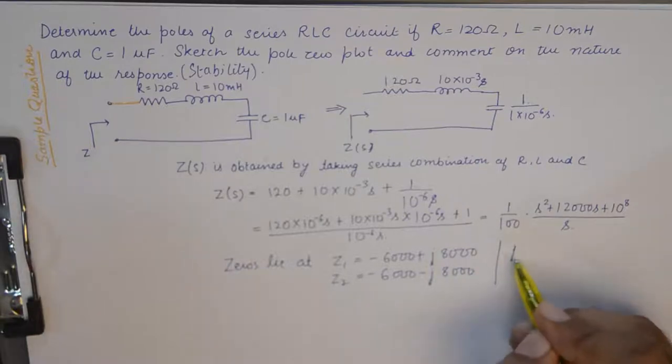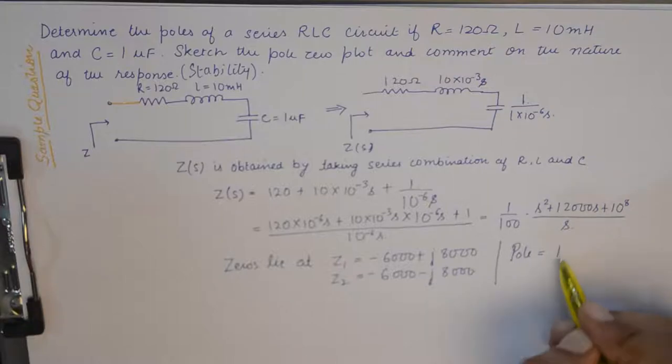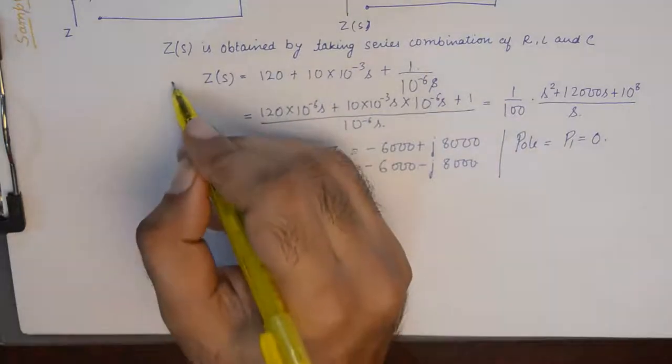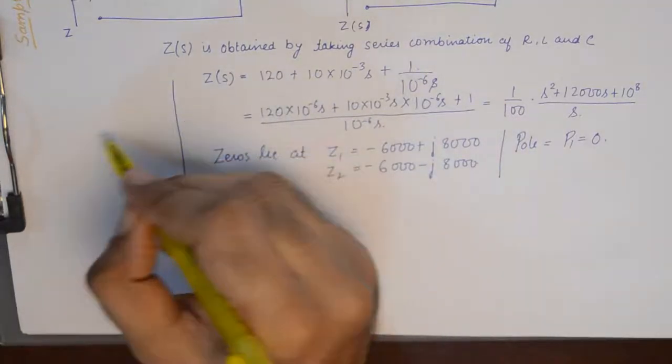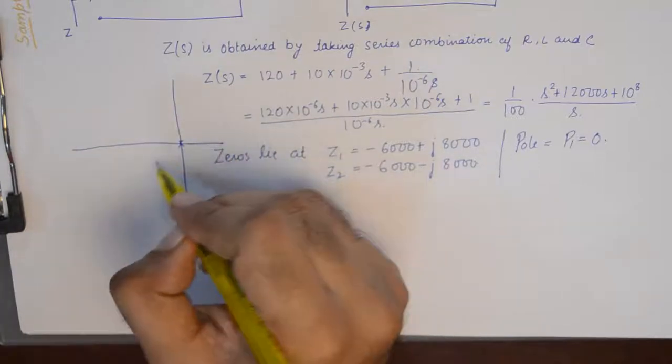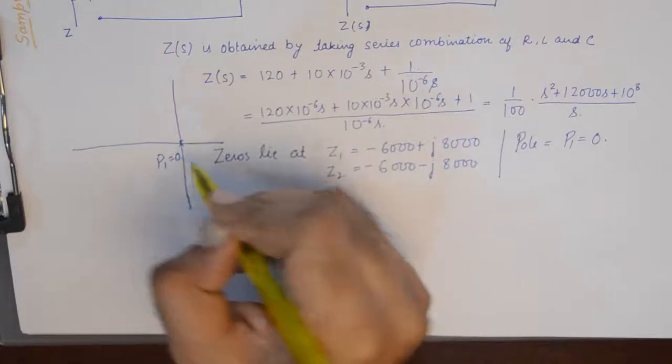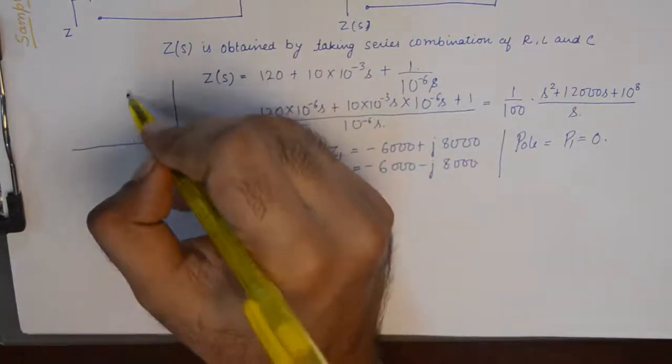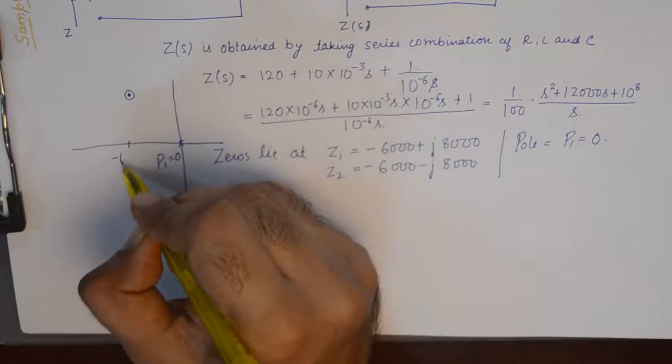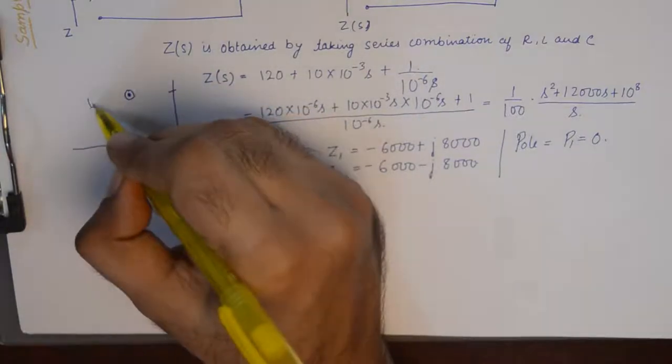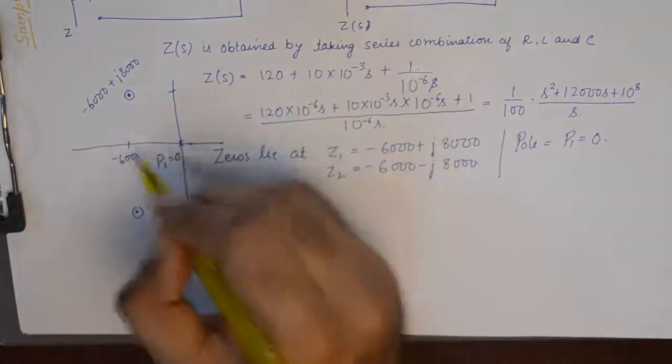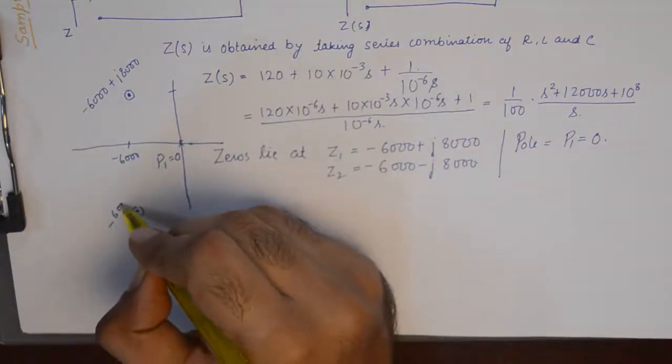And of course, our only pole is at zero. Now we need to draw the pole zero diagram. One of my poles is at zero, and two of my zeros lie at negative six thousand plus J eight thousand, and the other one is complex conjugate, so it will be mirror image for that.